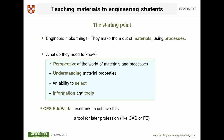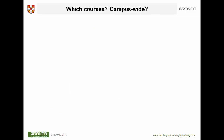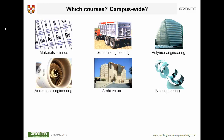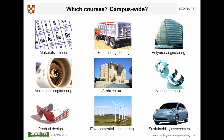What courses might you use this in? A very wide range: Material Science, General Engineering, Polymer Engineering, Aerospace Engineering, Architecture, Bioengineering, Product Design, Environmental Engineering, and most recently Sustainability Analysis. There are 12 different databases adapted to these different subject areas. Two of these are for General Engineering, which is what we're going to spend our time with today — the General Engineering Database.